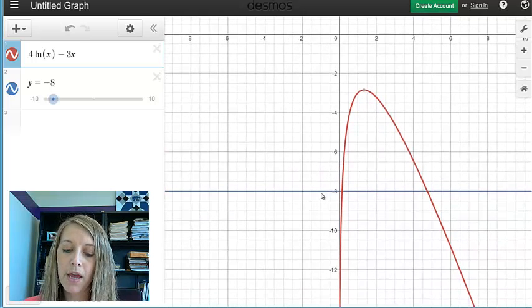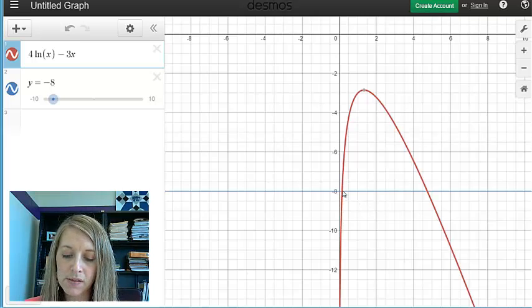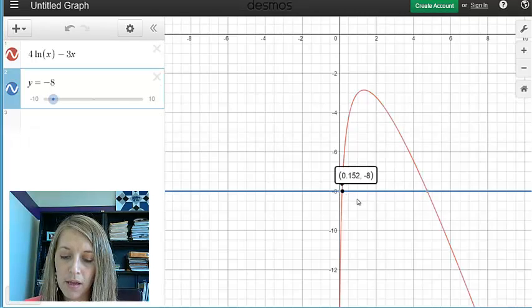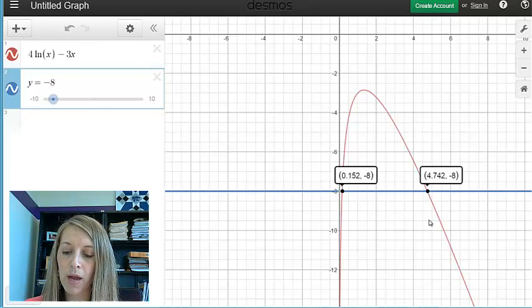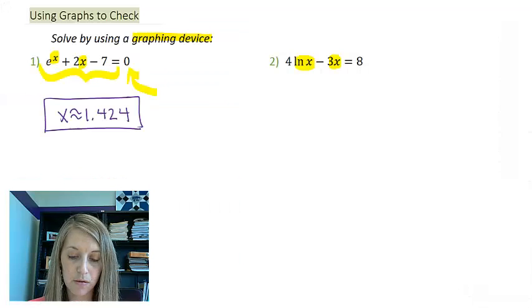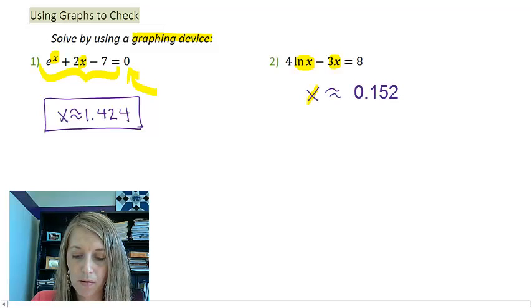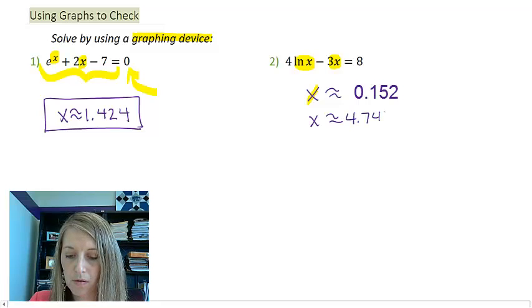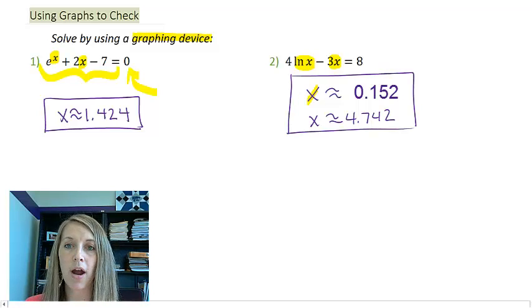I'm zooming up or shifting this up, and so now I do see this. There's actually two points of intersection here, one at this value right here, which is 0.152, and then one at this value right here, which is 4.742. And so, now I have the two solutions to this equation. And so, here are my answers to this equation by using my graphing device.